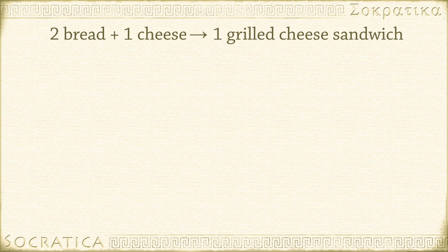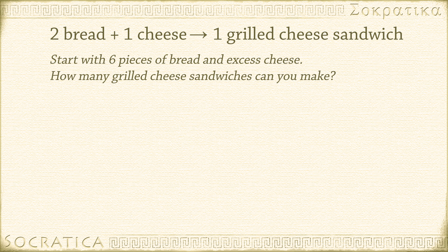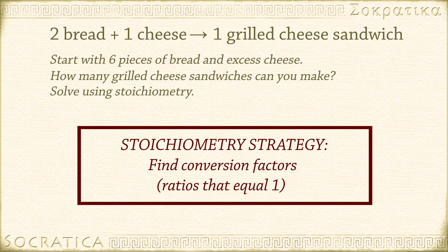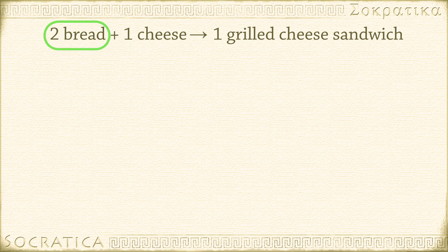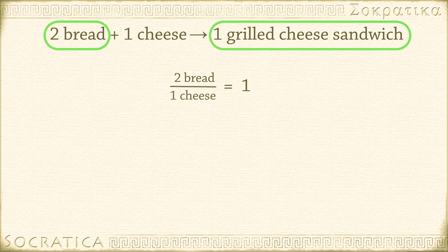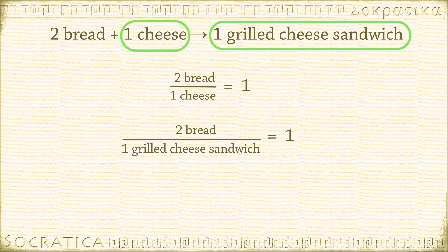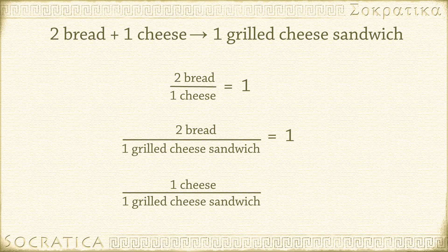Let's look at our grilled cheese sandwich recipe again. If you start with six pieces of bread and assume you have excess cheese — more than you need — how many grilled cheese sandwiches can you make? We can use the recipe to find conversion factors. Conversion factors are ratios that equal one. For every two pieces of bread you need one piece of cheese, so: two bread over one cheese equals one. For every two pieces of bread you get one grilled cheese sandwich: two bread over one grilled cheese sandwich equals one. And for every one piece of cheese you get one grilled cheese sandwich: one cheese over one grilled cheese sandwich equals one.